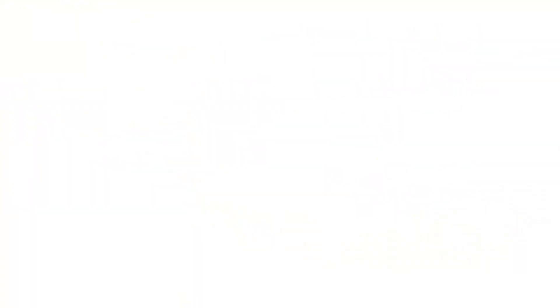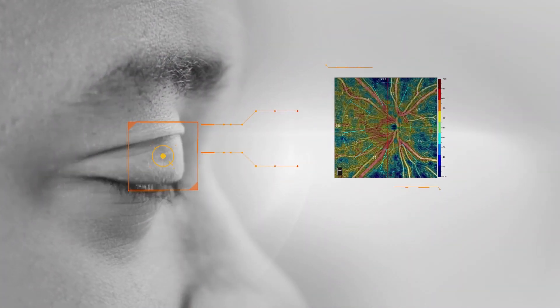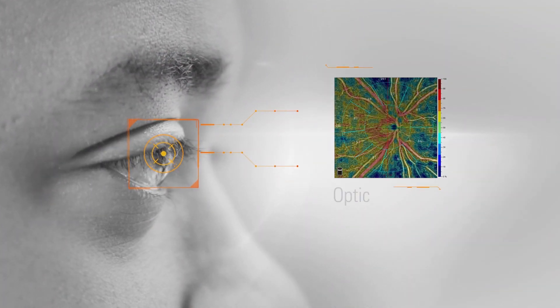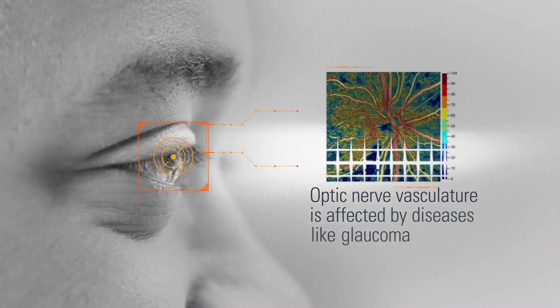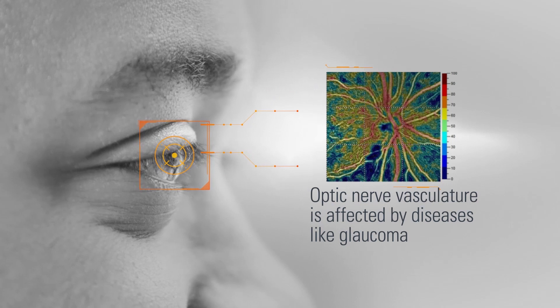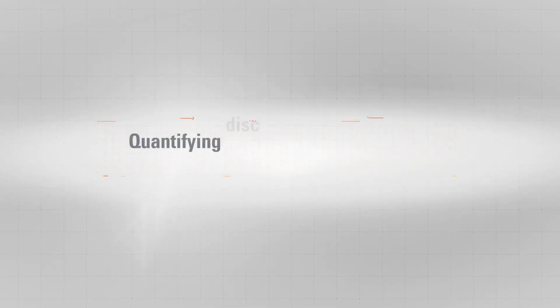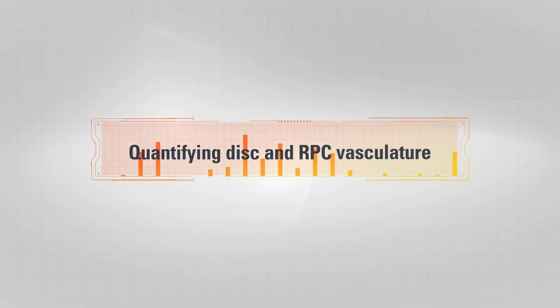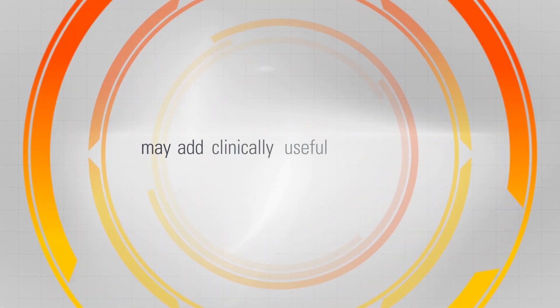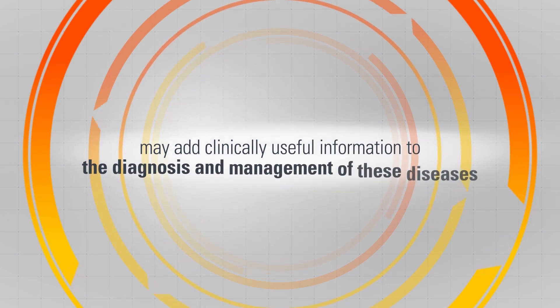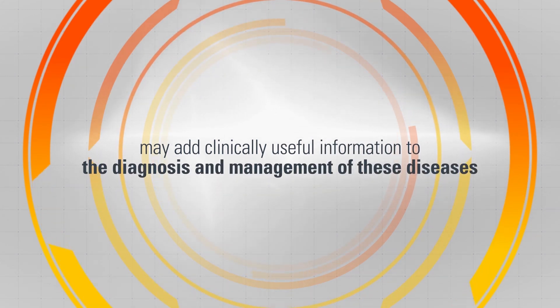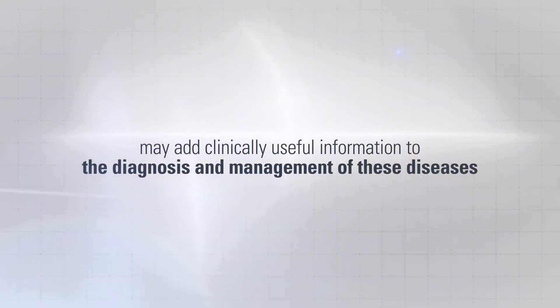Early research into optic nerve blood flow has shown that optic nerve vasculature is affected by diseases like glaucoma. Quantifying disc and RPC vasculature may add clinically useful information to the diagnosis and management of these diseases.